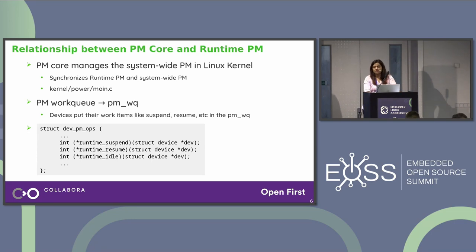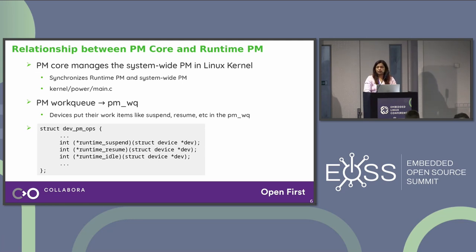Runtime power management is not completely independent — it integrates with PMCore for some of its features. PMCore is where all system-wide power transitions happen and handles all system-wide power management. Runtime PM also needs to work with PMCore to synchronize some functions with system-wide power management. PMCore also provides a work queue, so devices with runtime PM support put their work items related to suspend or resume into this work queue provided by PMCore.